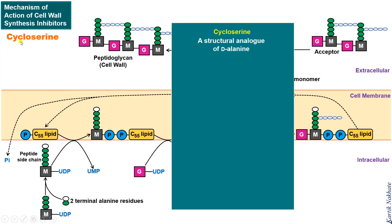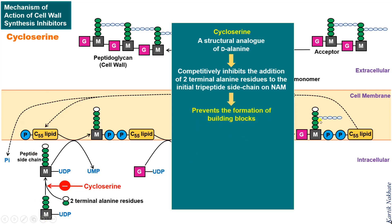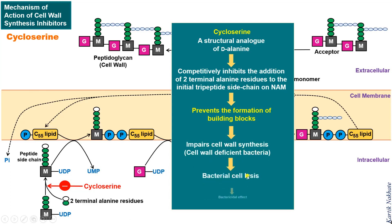Let us start with cycloserine. Cycloserine is a structural analogue of D-alanine. Therefore, it competitively inhibits the addition of two terminal alanine residues to the initial tripeptide side chain on N-acetyl muramic acid. This prevents the formation of peptidoglycan building blocks and impairs cell wall synthesis. The cell wall deficient bacteria becomes vulnerable to osmotic lysis, which ultimately results in the destruction of the bacterial cell.